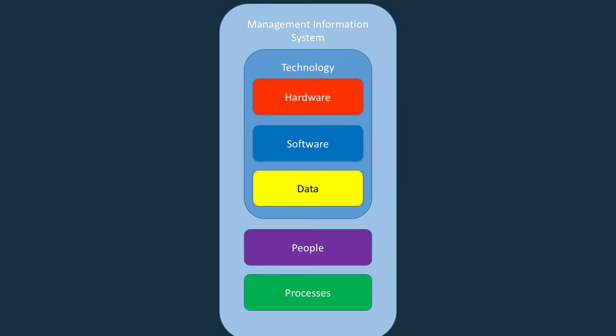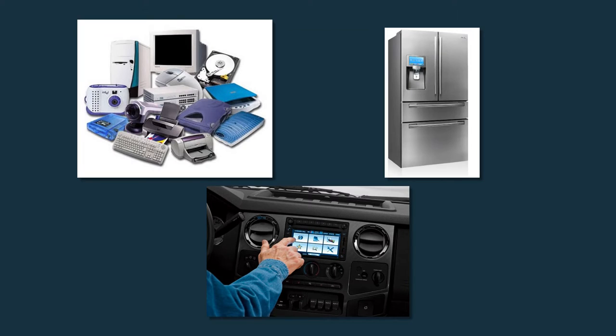As you progressed through each unit, you learned a little more about the detail of each of these components, which build upon the big picture of information systems. In Unit 2, you learned about hardware, software, networks, and security.